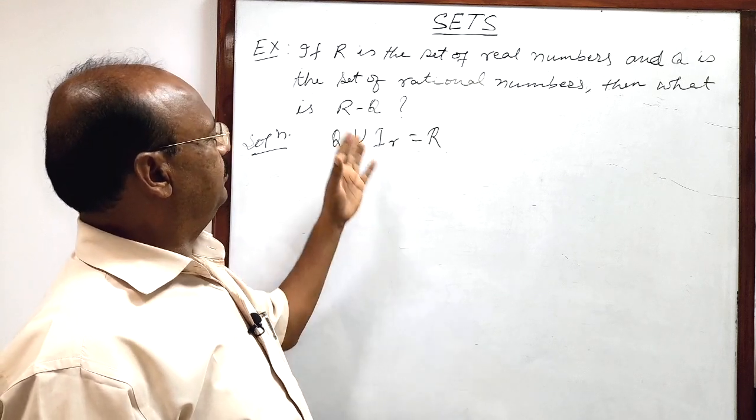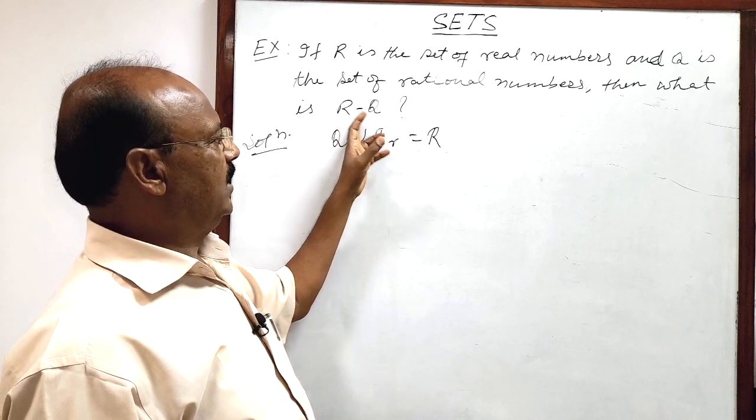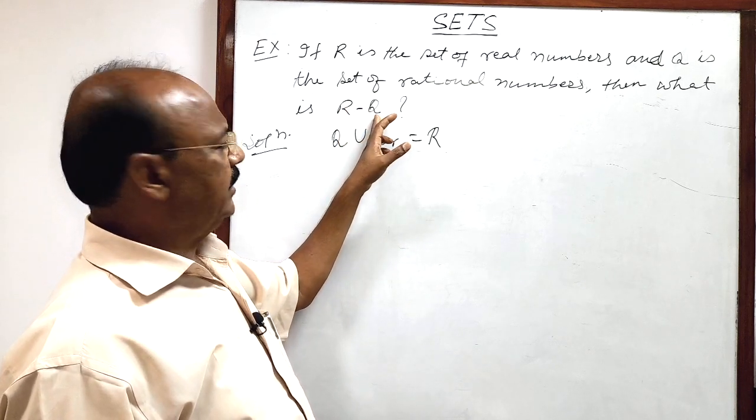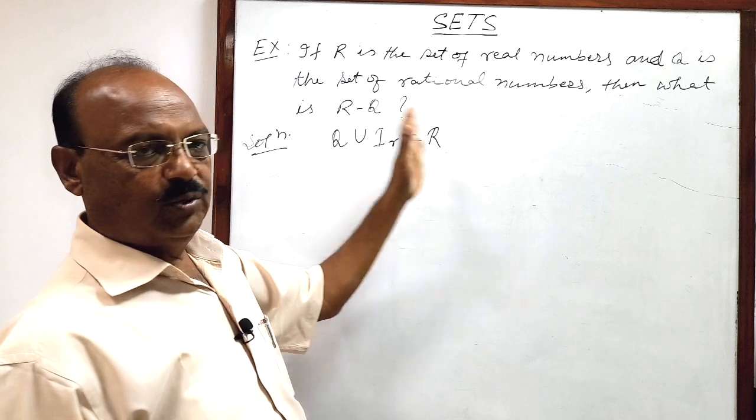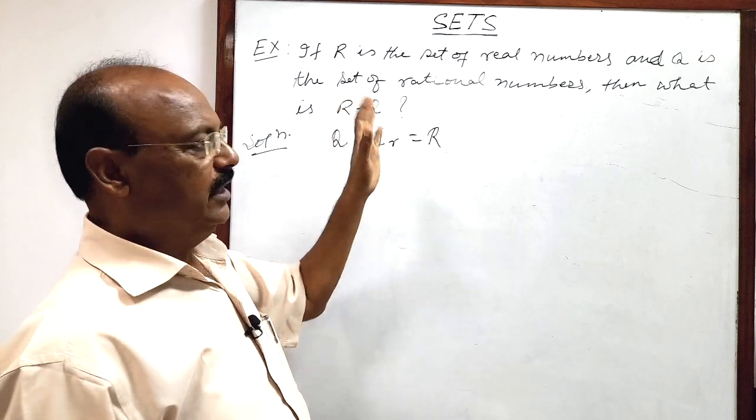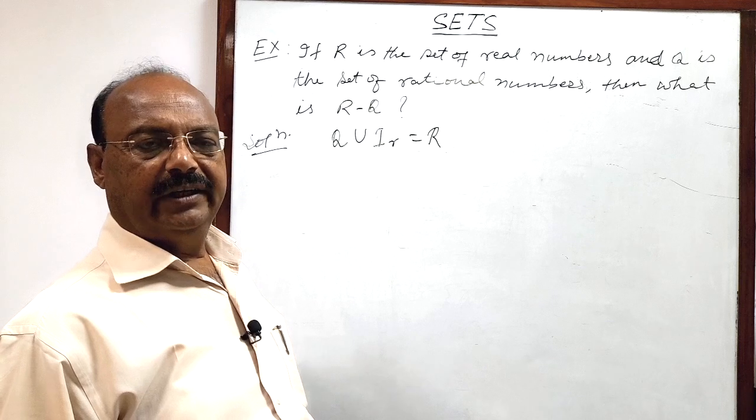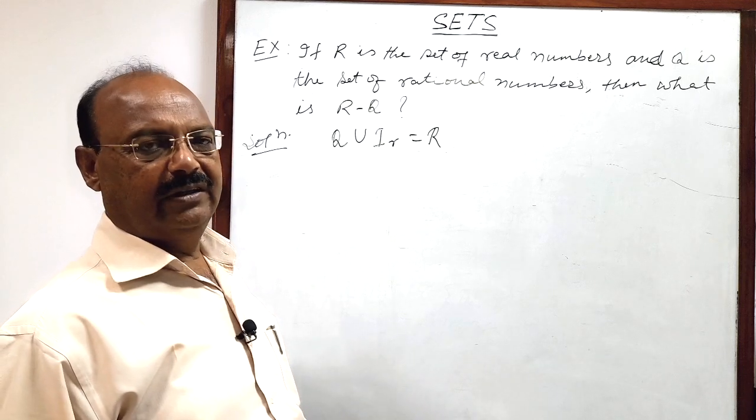Very simple, if from the set of real numbers all rational numbers are removed or deleted then only irrational numbers will remain in this set.